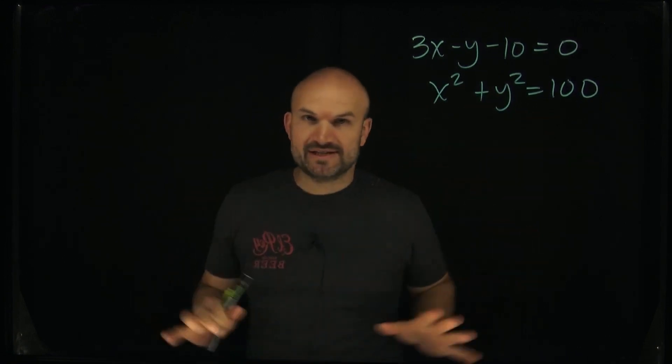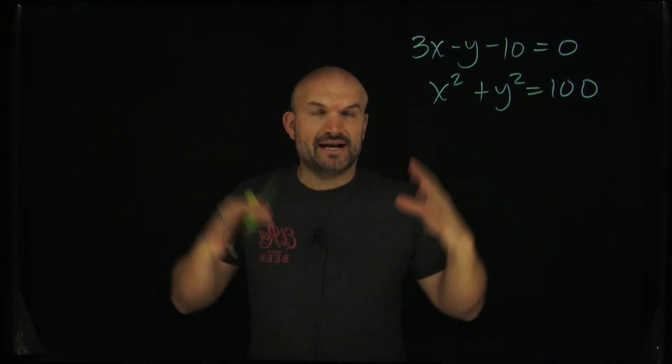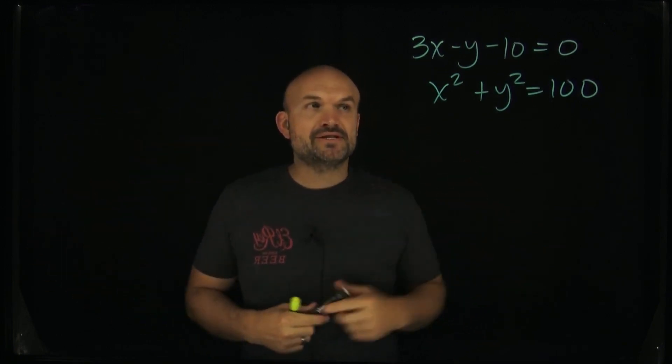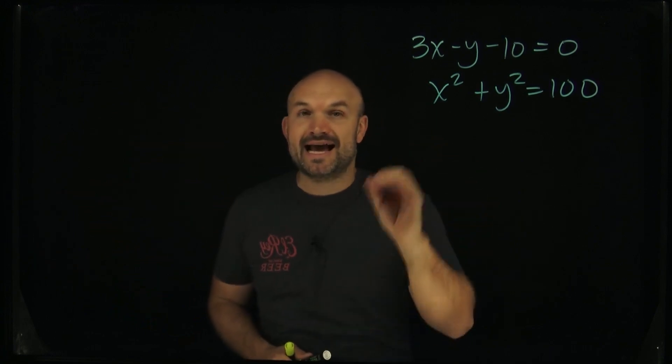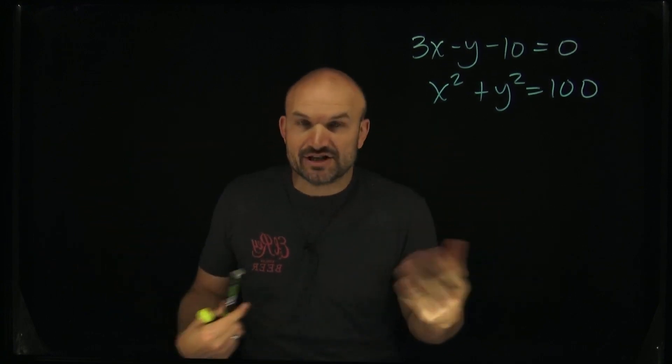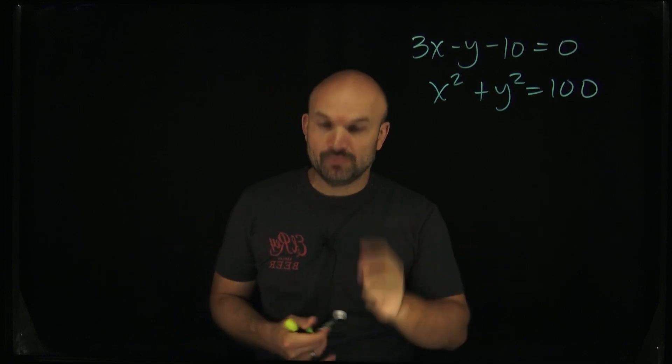Before we even get started, it's important to understand what I'm looking for. If I have a line and it possibly is going to intersect a circle, it could do that at no points, it could do that at one point which we call the tangent, or it could intersect at two points.